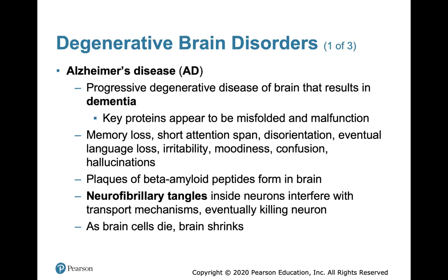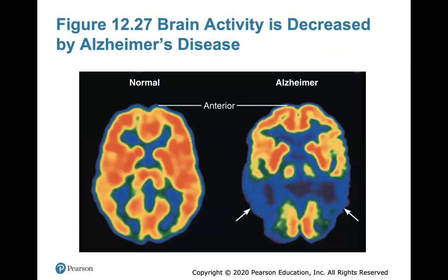Alzheimer's disease is a progressive degenerative disease of the brain that results in dementia. Key proteins appear to be misfolded and malfunctioned. It's accompanied by memory loss, short attention span, disorientation, eventual language loss, irritability, moodiness, confusion, and hallucinations. Brain cells actually die and the brain will shrink in size, as shown in MRI comparisons between a normal and an Alzheimer's brain.